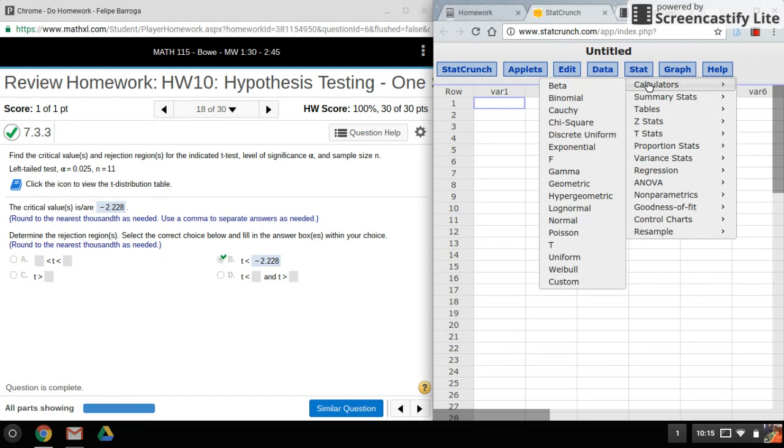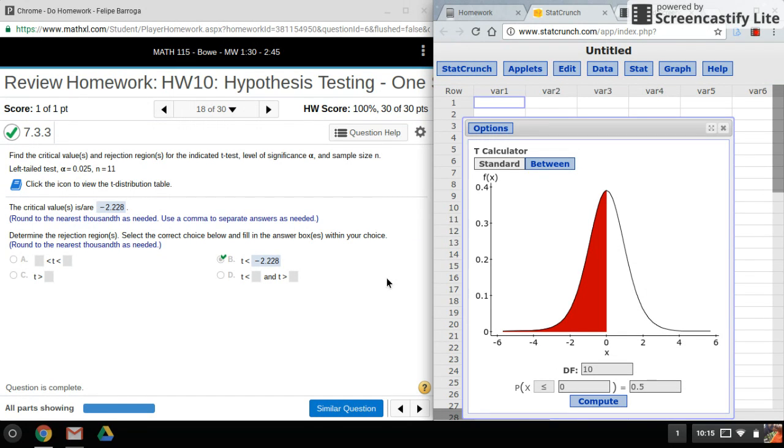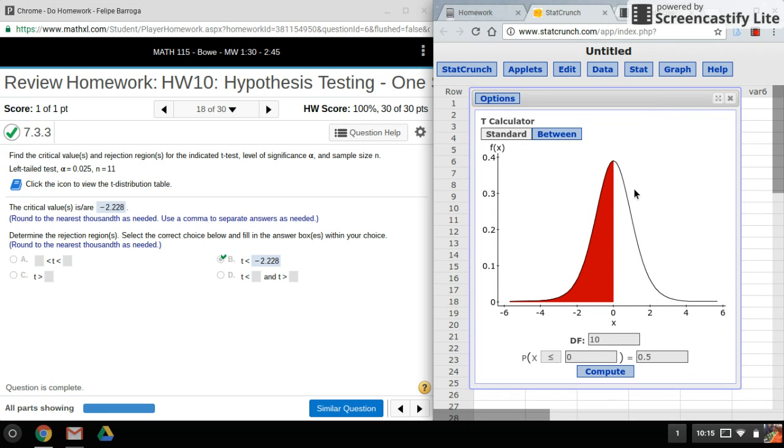So that's in stat calculators t. The thing about finding the critical values for t-test is that they got this thing here called degrees of freedom.